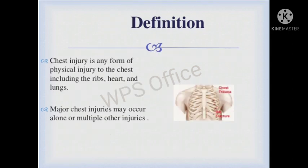Definition: a chest injury is any form of physical injury to the chest including the ribs, heart, or lungs. Major chest injuries may occur alone or with multiple other injuries. The heart may be involved alone, the lungs may be involved alone, the ribs may be involved alone, or the heart, lungs, and ribs may all be involved — that is known as multiple injuries.